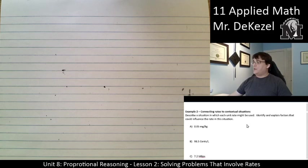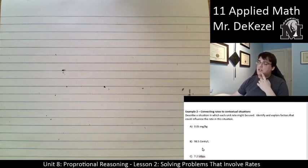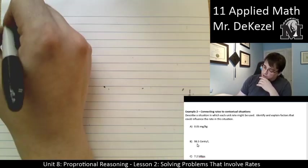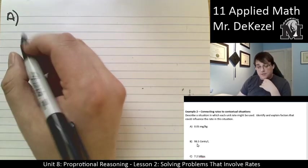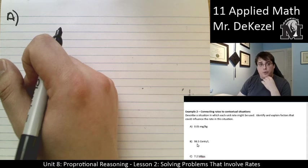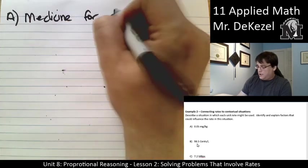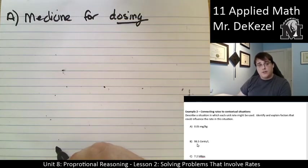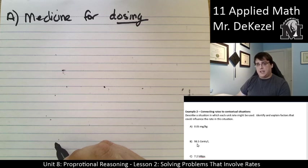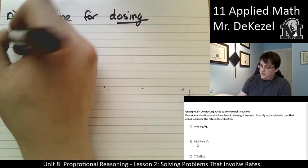So, example two, we are going to talk about different rates and what they can be used for and different things that we talk about in these units. So, describe a situation in which each unit rate might be used and identify and explain factors that could influence the rate in the situation. So, for A, we're talking about 0.05 milligrams per kilogram. That's a very small amount and per a weight. This unit is often used in medicine for dosing, right? And you want to use per kilogram because that is a unit that you can measure someone as and then you know exactly how much of that medication to give them.